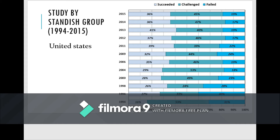Looking at the percentages from 1994 to 2015: in 2015, there is 36% succeeded, 45% challenging, and 19% failure. In 1994, there is 16% succeeded, 53% challenging, and 31% failure. From the overall data, the early time period was not so successful — the success rate was lower and the failure rate was higher compared to 2015.